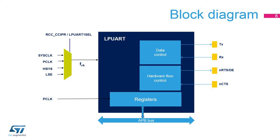Here is the LPUART block diagram. The LPUART clock FCK can be selected from among the system clock, APB clock, high-speed internal 16 MHz RC oscillator, or the HSI-16, or the low-speed external 32.768 kHz crystal oscillator, or LSE.